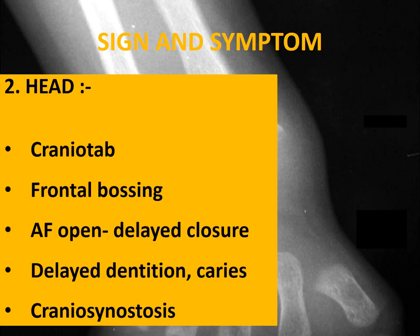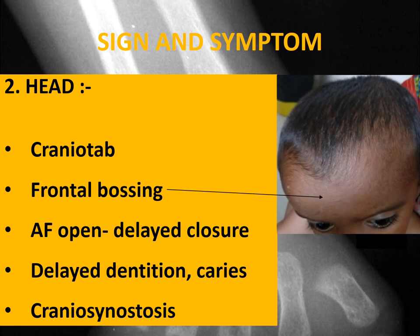In the head, craniotabes can be present. Craniotabes is due to softening of the skull bone — when we palpate the skull from the occiput, a ping pong ball feeling will be there. Frontal bossing, due to frontal bone prominence, is seen in patients of rickets. In this picture you can see the child is having frontal prominence.